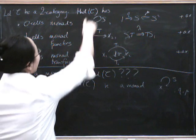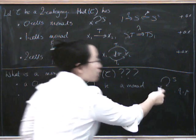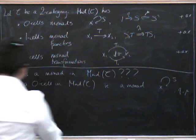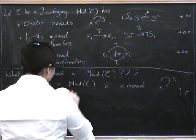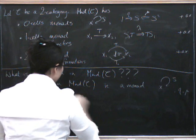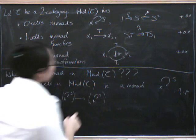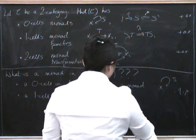So now, what else do we need? We need an endo-1 cell on this thing. So, we need a monad functor from this monad to itself. So, that's this lot of stuff. So, we need a 1 cell from XS to XS. So, what's that? I.e., we've got a T from X to X.